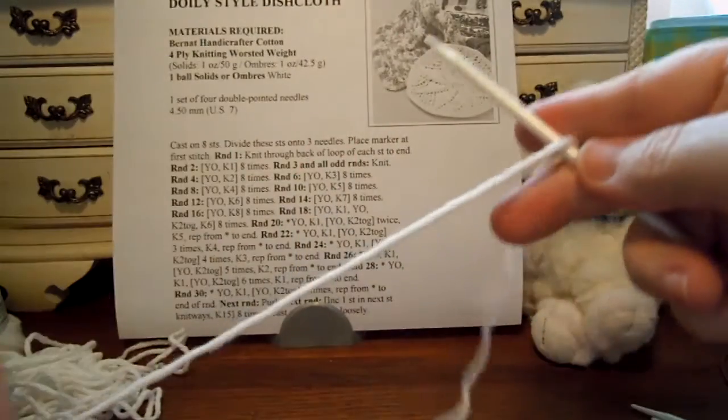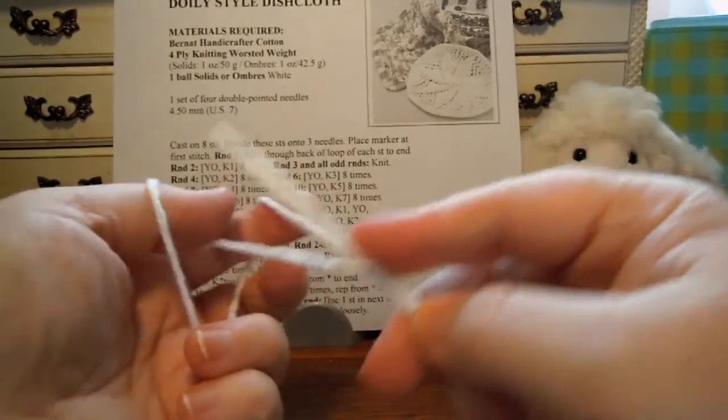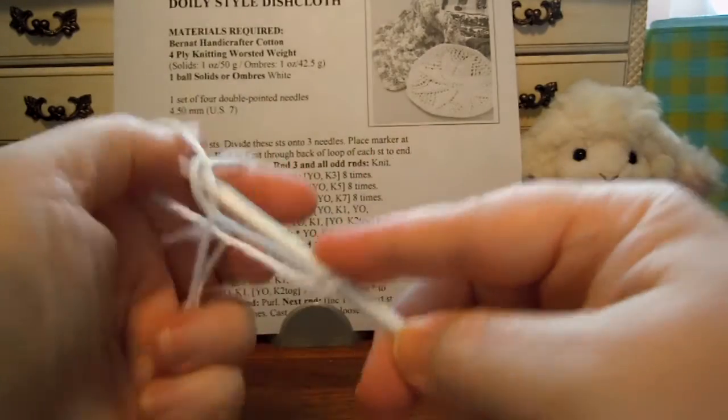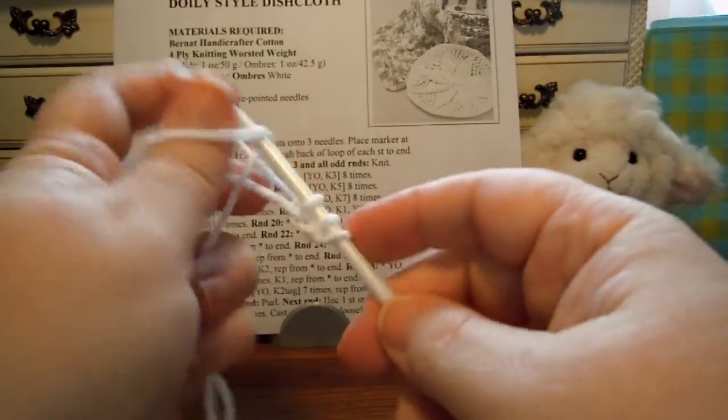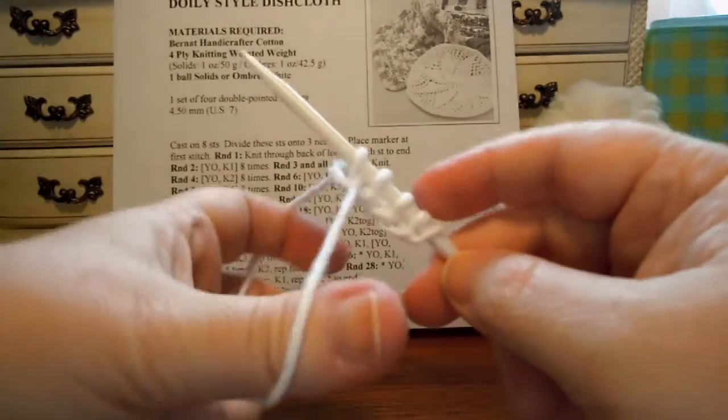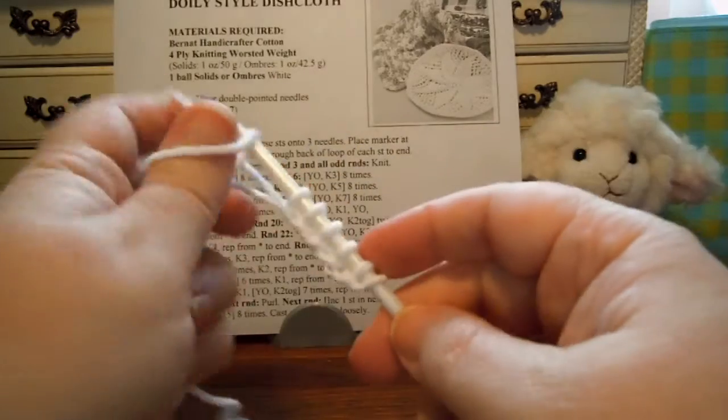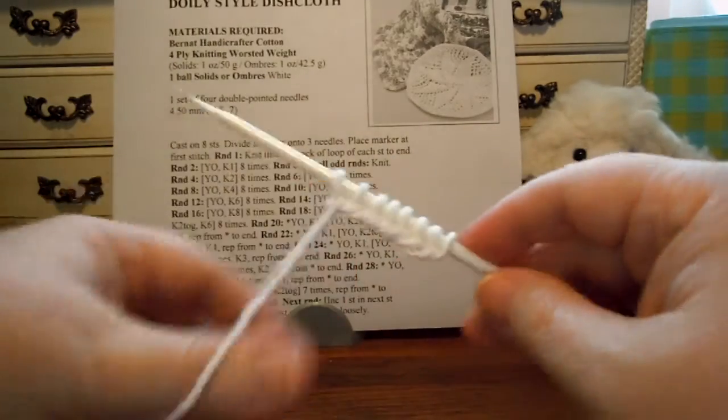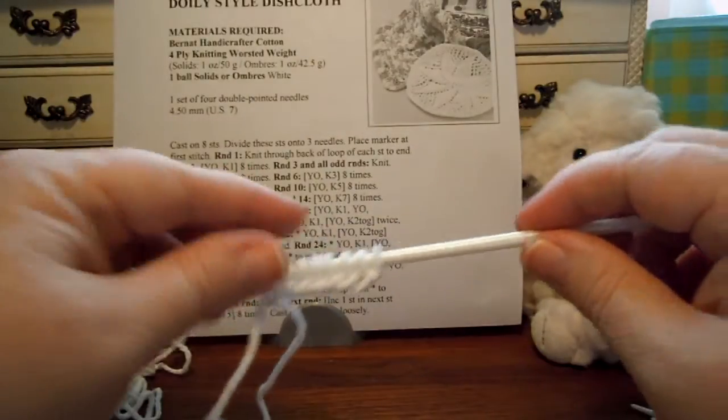So I'm going to use my long tail cast on. One, two, three, four, five, six, seven, eight. So I've got it on. I've got eight stitches here.